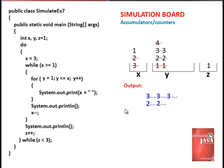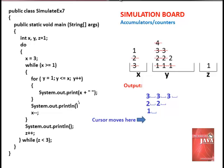Look back on the while statement. Is x greater than or equal to 1? X is 1, therefore equal to 1 — true. Assign 1 once again to y as you enter the for loop. Is y less than or equal to x? True, since y and x both equal 1. Print the value of x joined by a space. Increment y — y is 2. Is 2 less than or equal to 1? False. Escape the for loop. Advance cursor one line by system.out.println. Decrement x — x now has a value of 0.